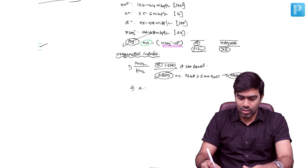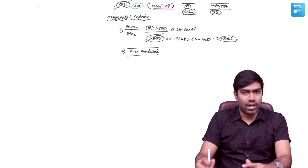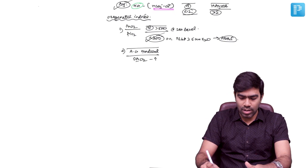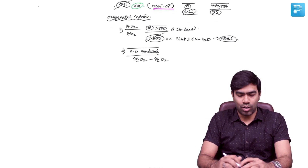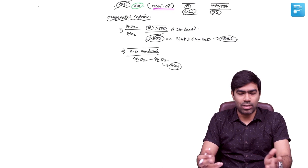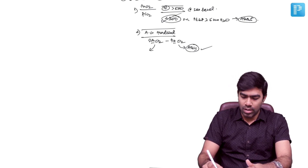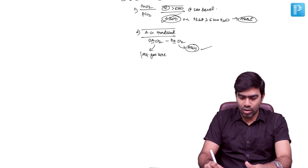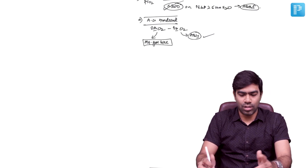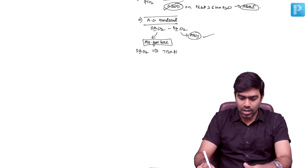The second oxygenation index is the AA gradient. Both have their own limitations, which I won't discuss here as it's a pulmonary topic. The AA gradient is: alveolar oxygen tension minus arterial oxygen tension. Arterial oxygen tension is easy to obtain from the ABG machine itself. Alveolar oxygen tension can be found using the alveolar gas equation: alveolar oxygen tension equals 713 multiplied by FiO2 minus PaCO2 divided by 0.8. This is applicable at sea level.